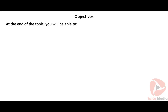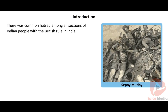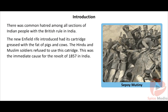At the end of this topic, you will be able to identify the various reasons for the revolt of 1857 and recognize the British policies that instigated this revolt. Indian people from all sections were unhappy with the administration of the British in India. In the year 1857, a revolt broke out in India against British rule.